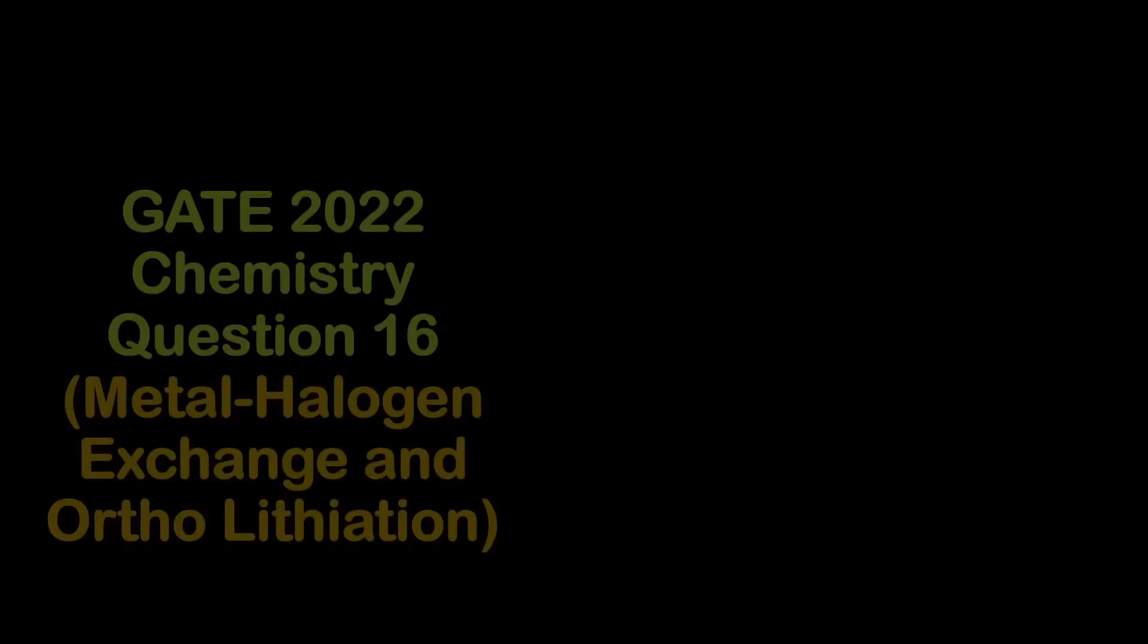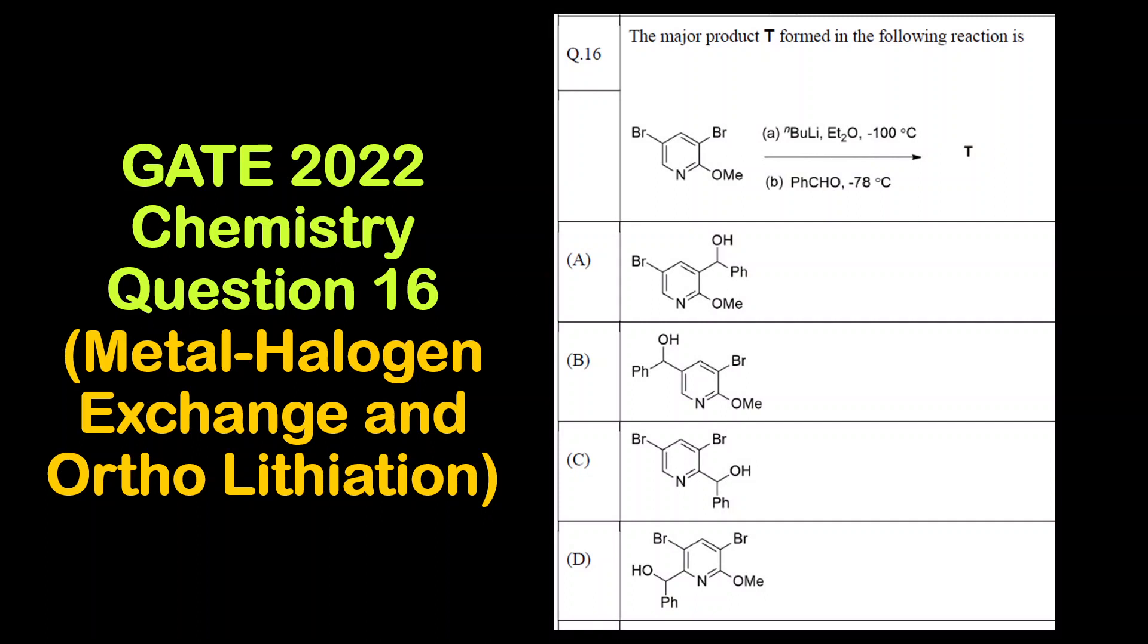Hello everyone, welcome to Chemezon Complete Chemistry. In today's video we are going to solve question 16 of GATE 2022 chemistry paper. It is based on metal-halogen exchange and the concept of ortholithiation.